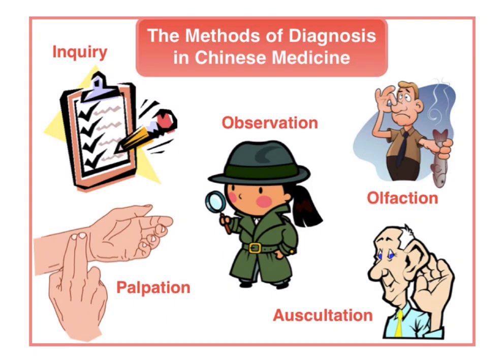Just to recap quickly, the four main methods of diagnosis in TCM are: inquiry, where we ask all our questions to figure out the diagnosis; observation, which is the one we're talking about today and includes the tongue; palpation, which includes the pulse; and auscultation, which is hearing or listening, and olfaction, which is smelling. The biggest ones used in clinical practice are inquiry, observation, and palpation. The other two should not be dismissed — they just don't play as big a role in TCM diagnosis.